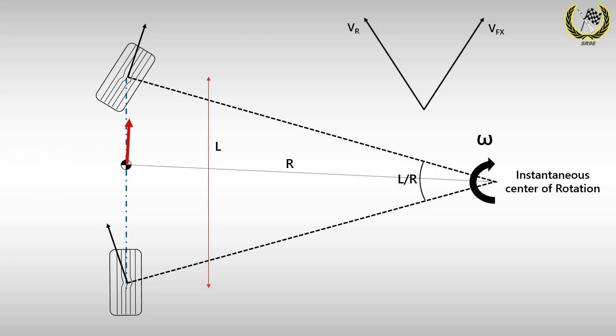From further geometric derivations, we can find a relation between the slip angles and the steering angle. The sum of the rear slip angle and the steering angle is equal to the sum of the front slip angle and the angle subtended at the centre of rotation. This is the single most important concept to remember from this video.